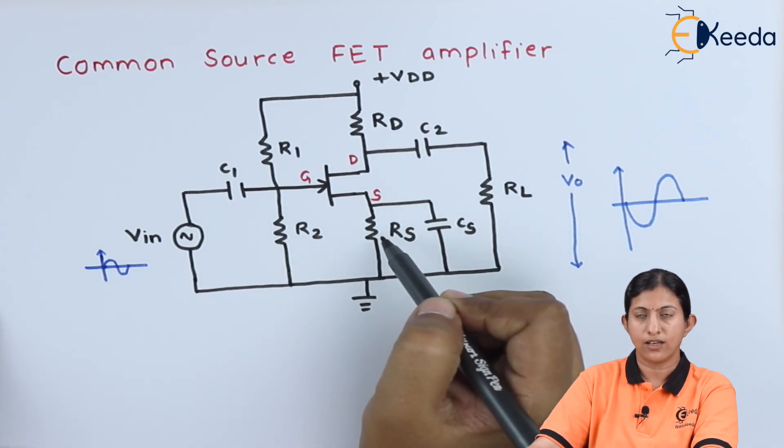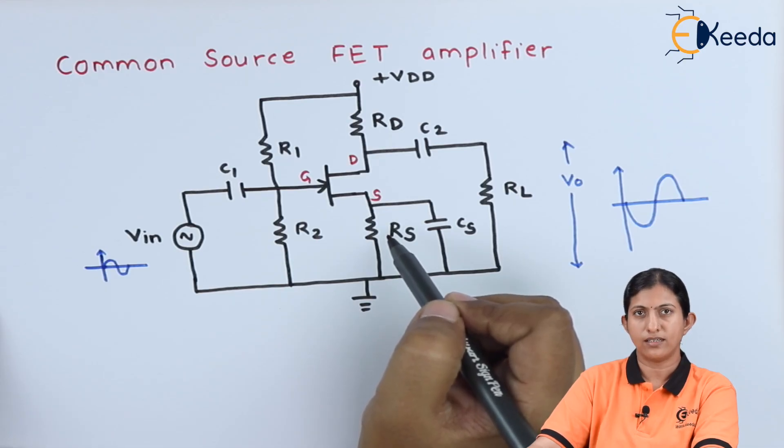R2, and RS form the voltage divider biasing which will bias the transistor in the active region, and this transistor will work as an amplifier.